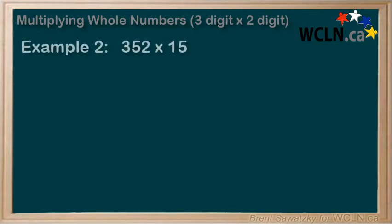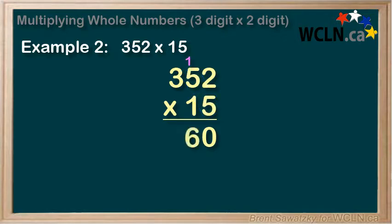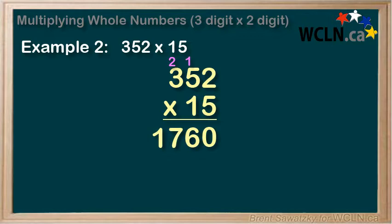Let's work through one more. Example 2: 352 times 15. Lining them up, again we have two numbers on the bottom. We'll start with the 5. 5 times 2 is 10 — put the 0 down here and carry the 1. Next, 5 times 5 is 25, and we remember our extra 1, or 26. So we mark the 6 down here and carry the 2 to the 100 spot. 5 times 3 is 15, and we add our extra 2 for 17. So after dealing with the 5, our answer so far is 1760.